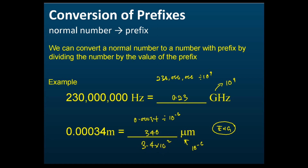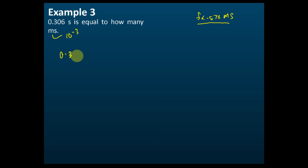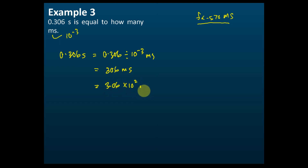Example 3: 0.306 seconds equals how many milliseconds? Milli is ten to the power of negative three, so 0.306 seconds divided by ten to the power of negative three gives 306 milliseconds, or in standard form, 3.06 times ten to the power of two milliseconds.